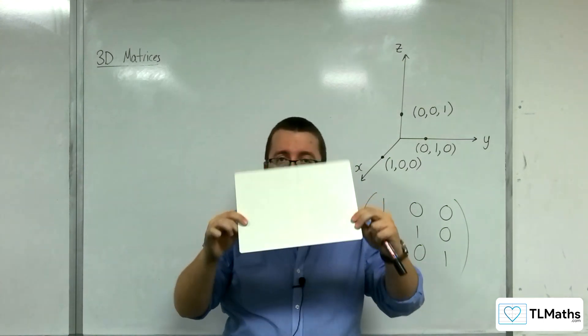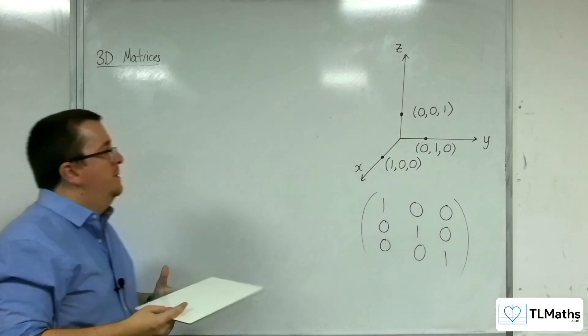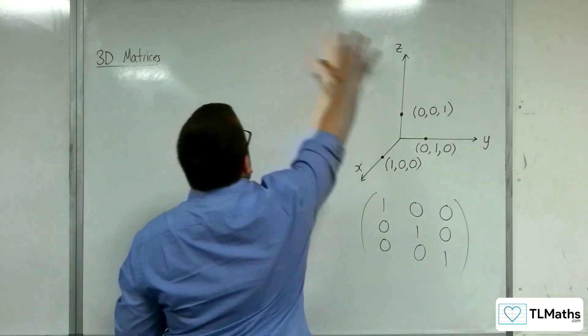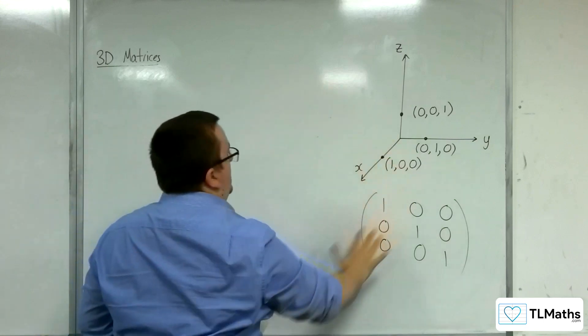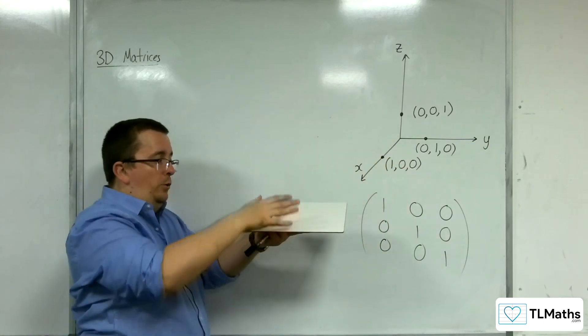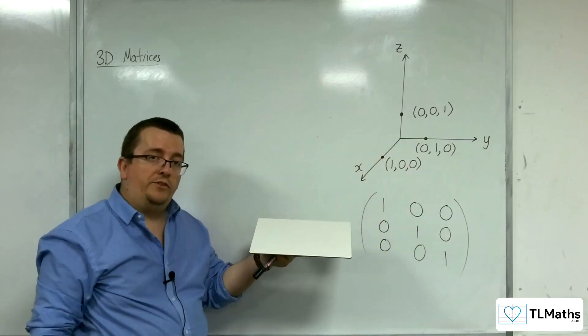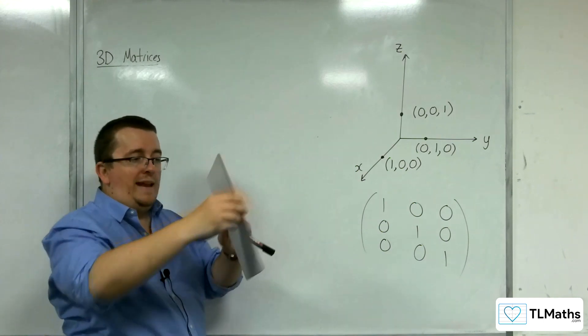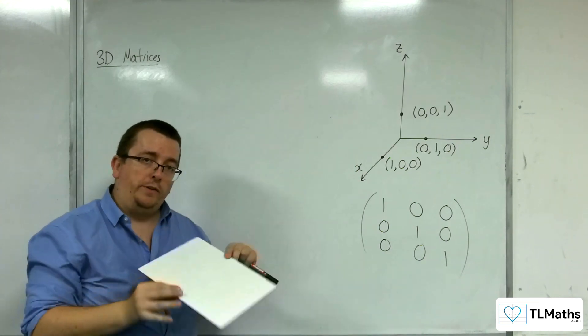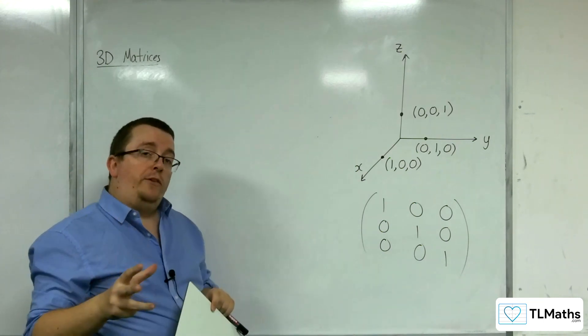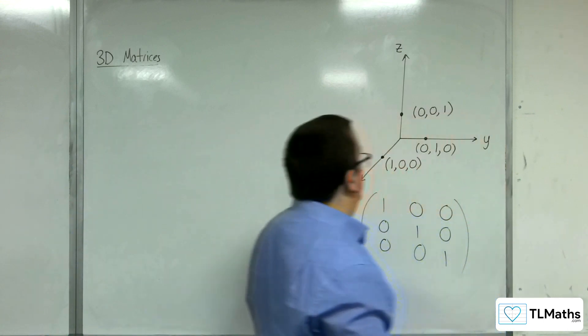Thinner than this whiteboard that I'm holding. But this wall here can be a plane. This can be a plane also, coming out at an angle if you wanted to. You can have a plane going at any angle you like in three dimensions.